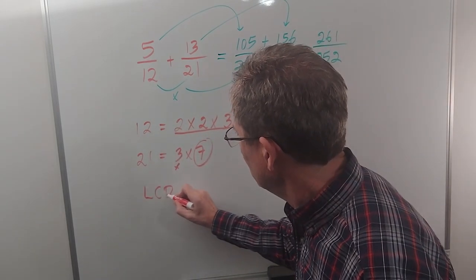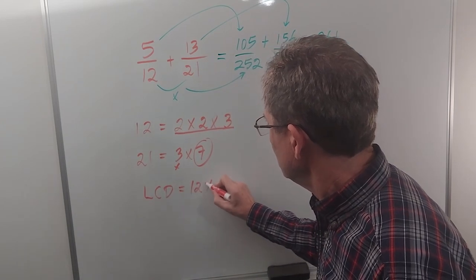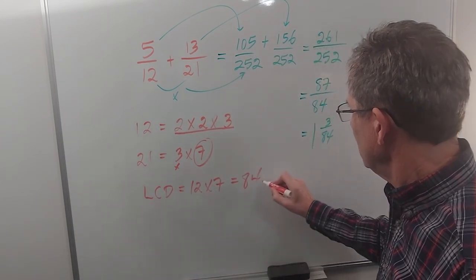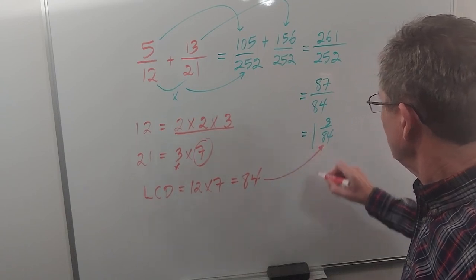So the lowest common denominator is 12 times 7, or like I said, 84, which is looking right because we've got 84s over here.